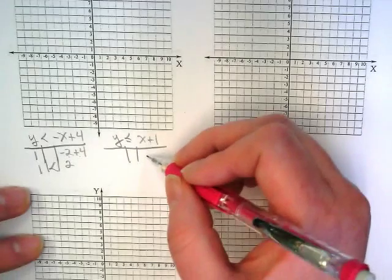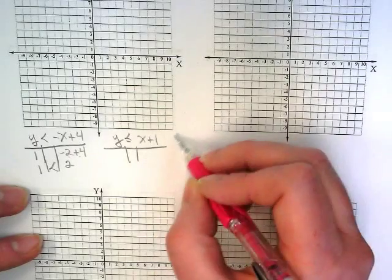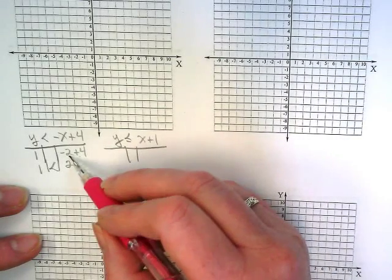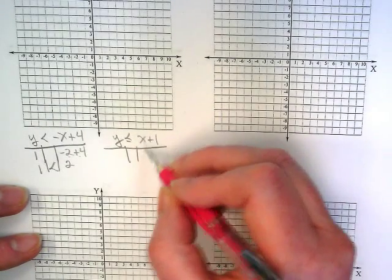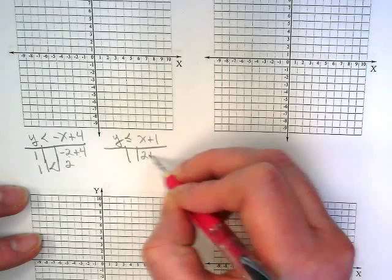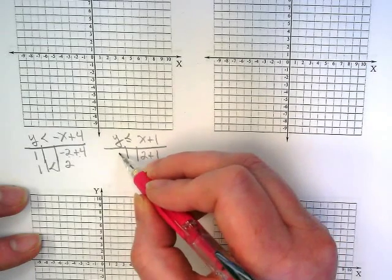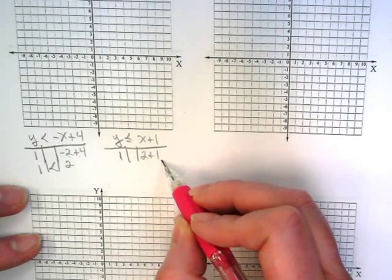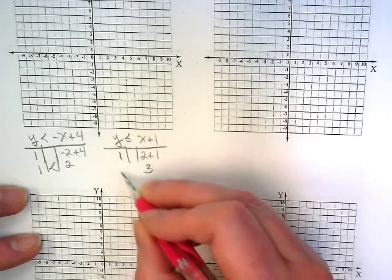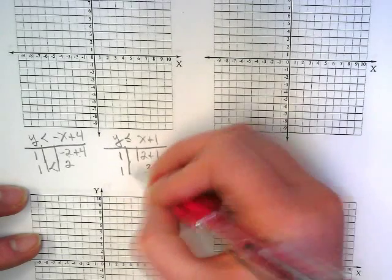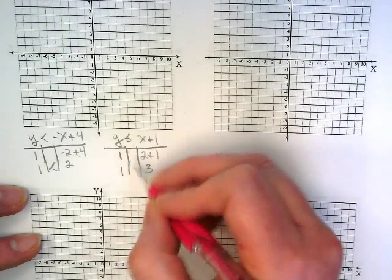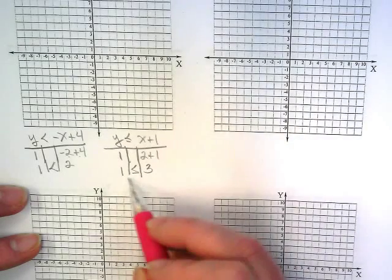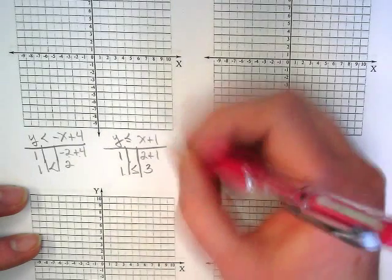But we also have to check this one. So again, our ordered pair is two comma one. We're going to put the two in where the x is. We're going to put the one where the y is. We're going to solve the right side, which is three. And the left side stays as the one. Does this inequality symbol work still? Yes. So this would be a yes.